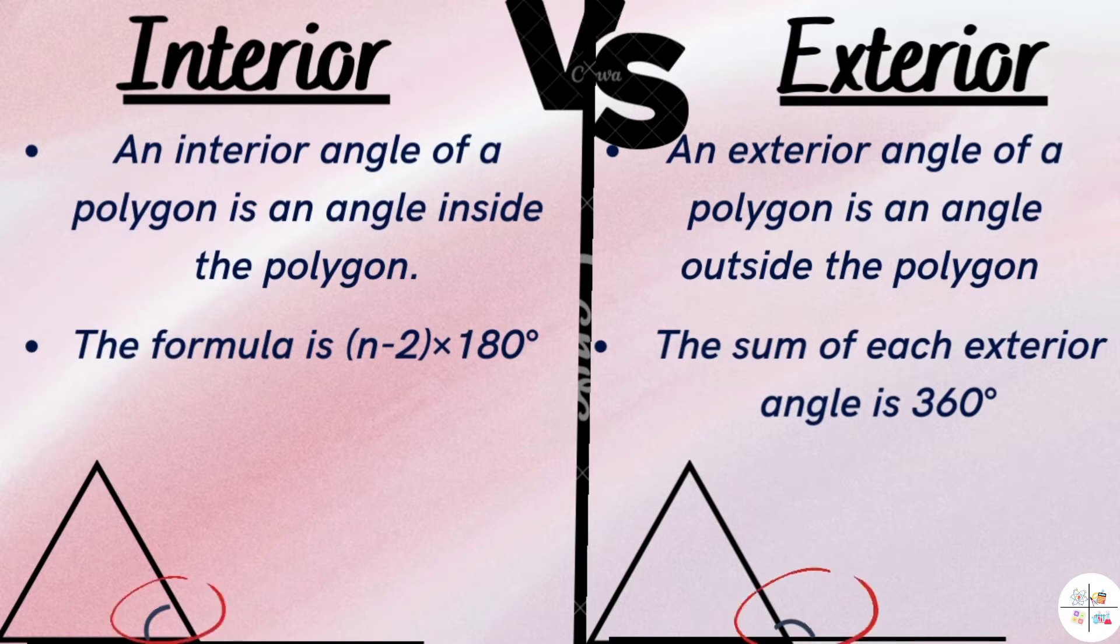Exterior angle of a polygon is an angle outside the polygon. The sum of each exterior angle is 360 degrees.